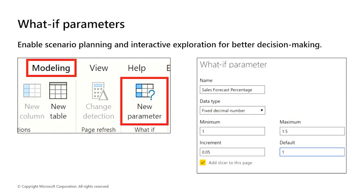Use what-if parameters to run scenarios and scenario-type analysis on data. What-if parameters are powerful additions to Power BI data models and reports because they enable looking at historical data to analyze potential outcomes if a different scenario had occurred. Additionally, what-if parameters can help predict or forecast what could happen in the future. Using the what-if parameter after creating it requires creating a new measure whose value adjusts with the slider. Create complex and unique measures that let report users visualize the variable of your what-if parameter. To keep the example simple, the new measure is the total sales amount with the forecast percentage applied.